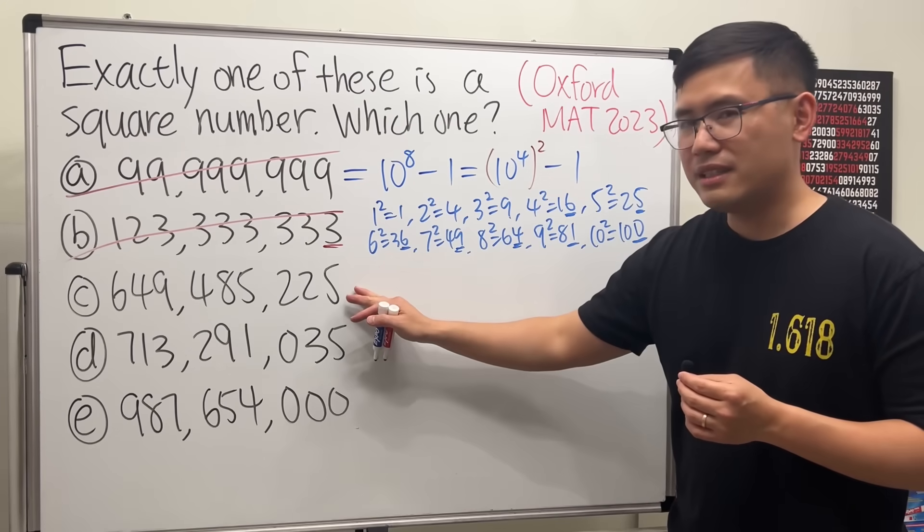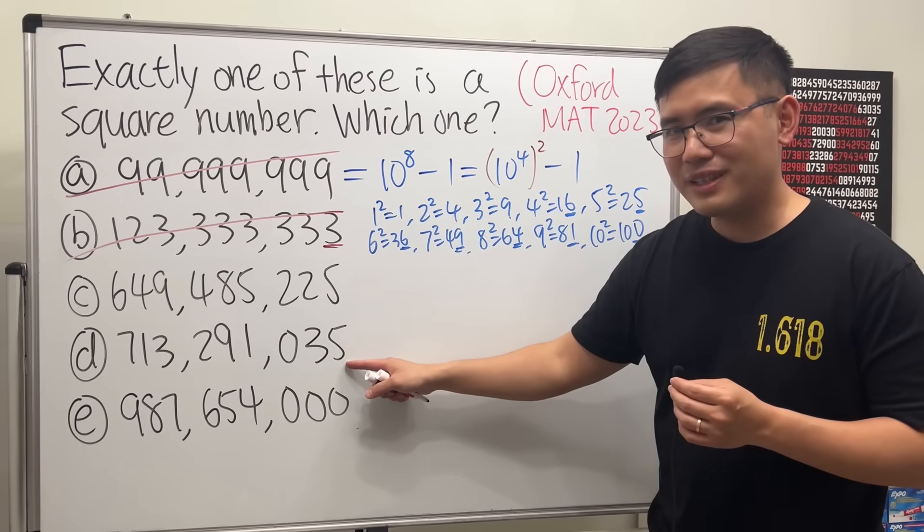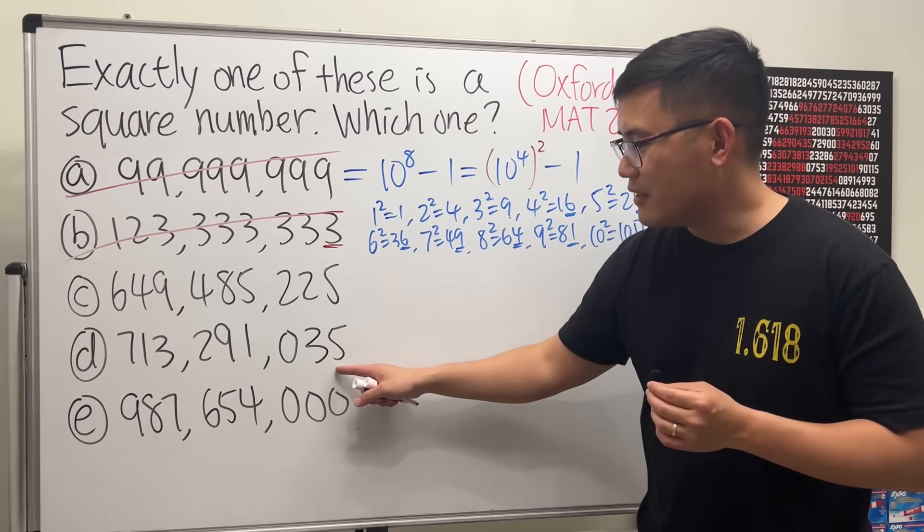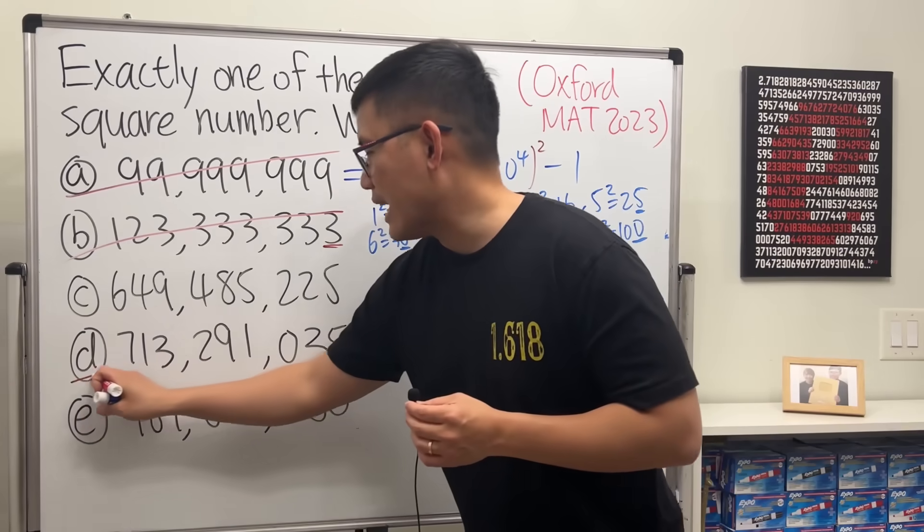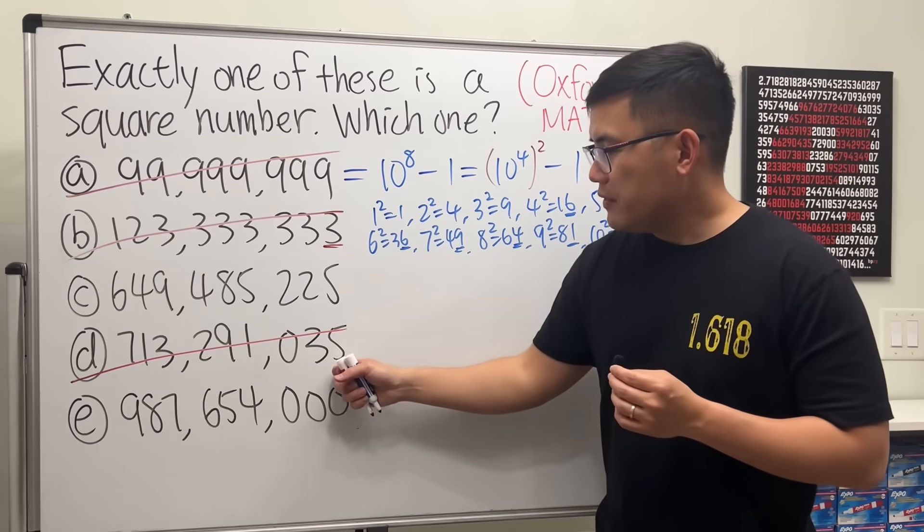But for D, it also has a five, but guess what? Because it ends with a 35, this is also not possible.